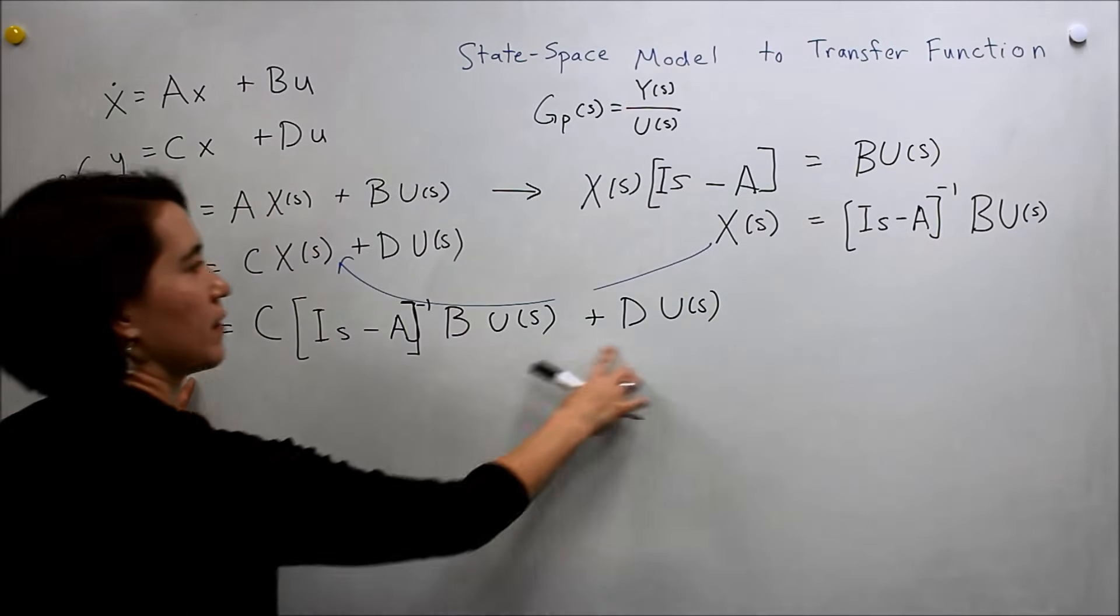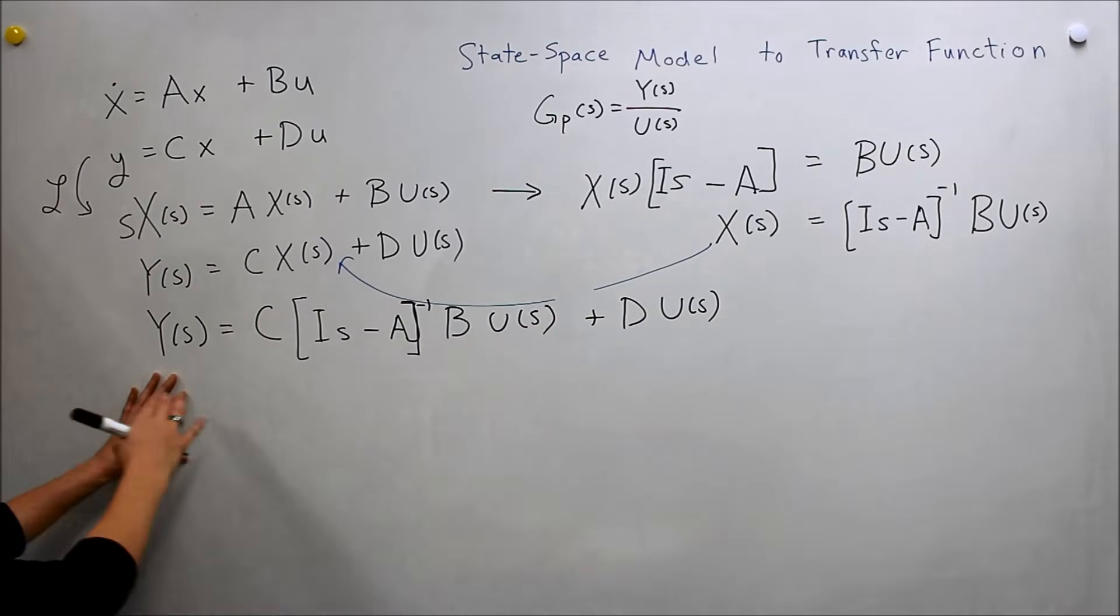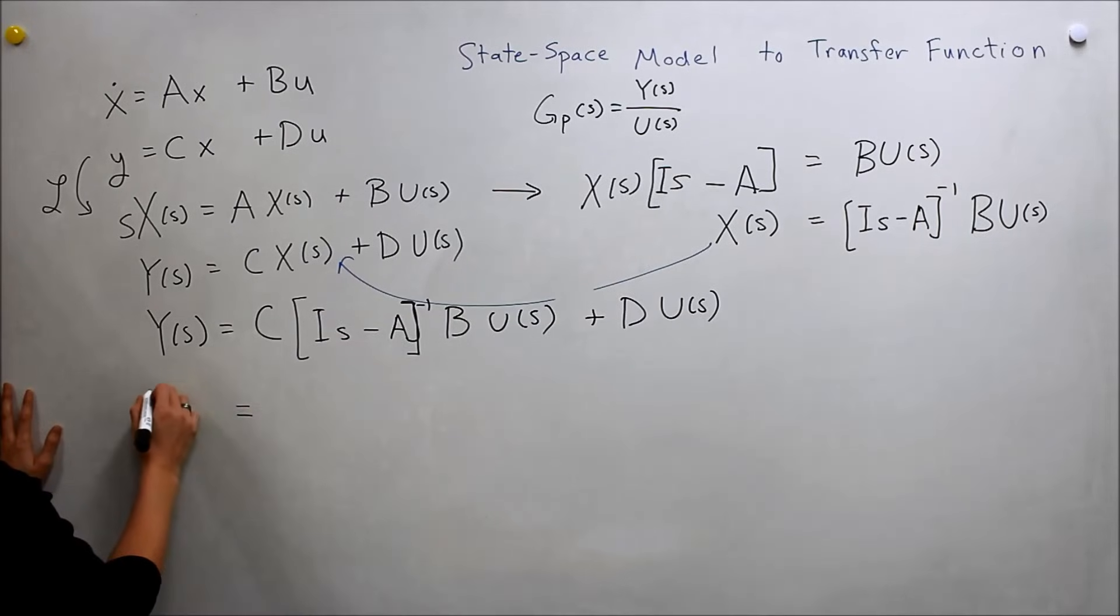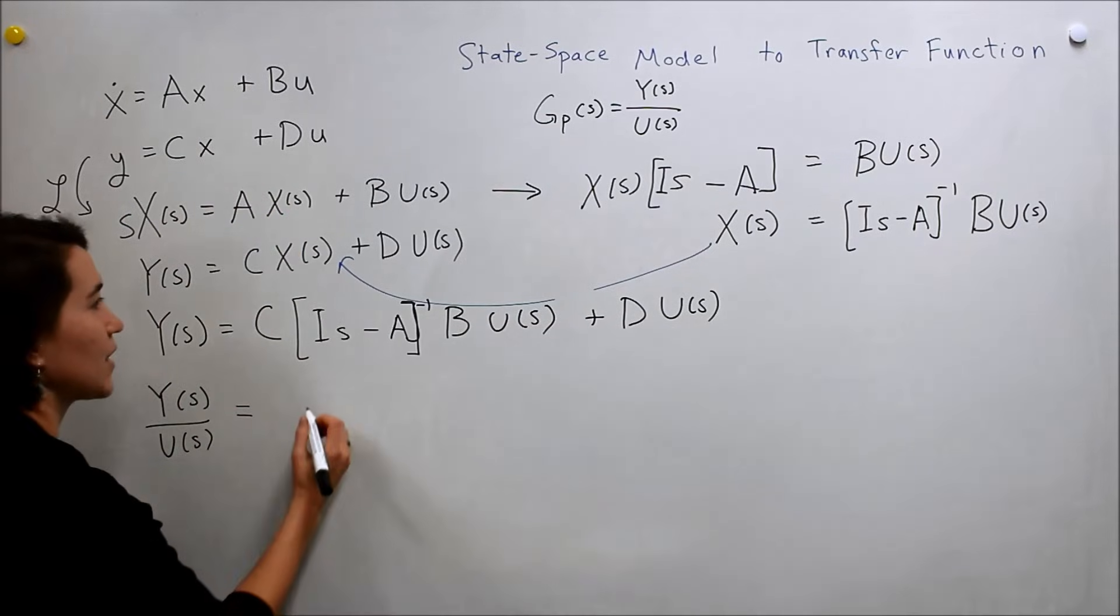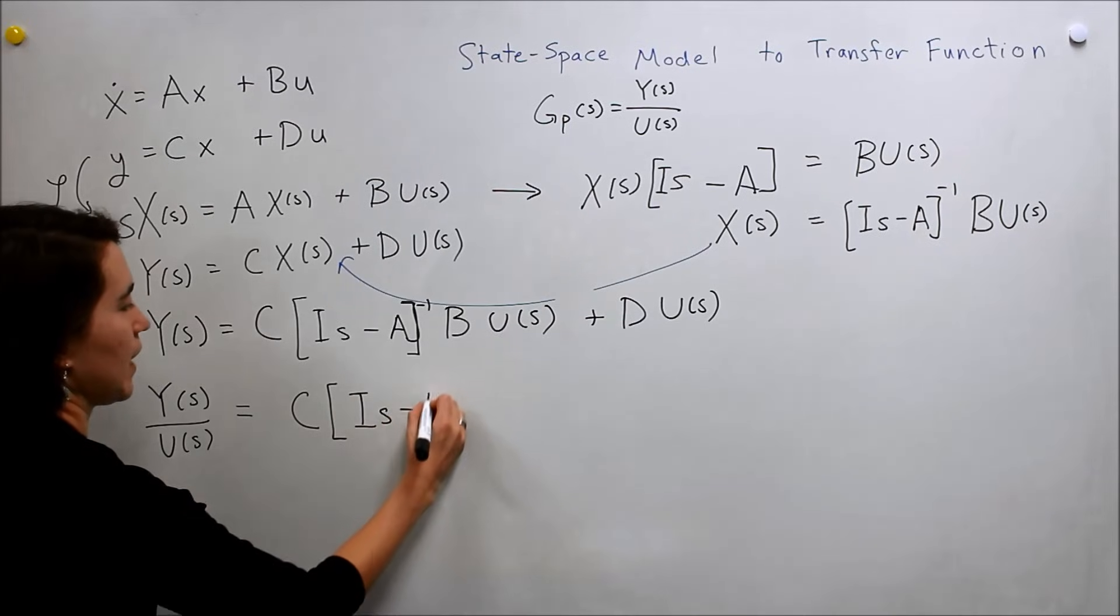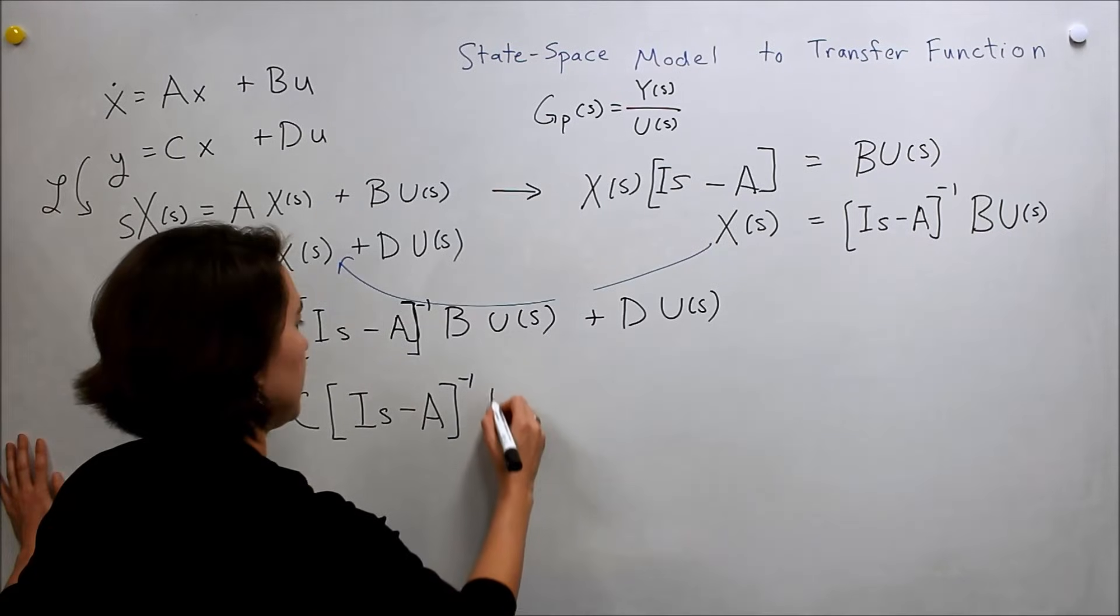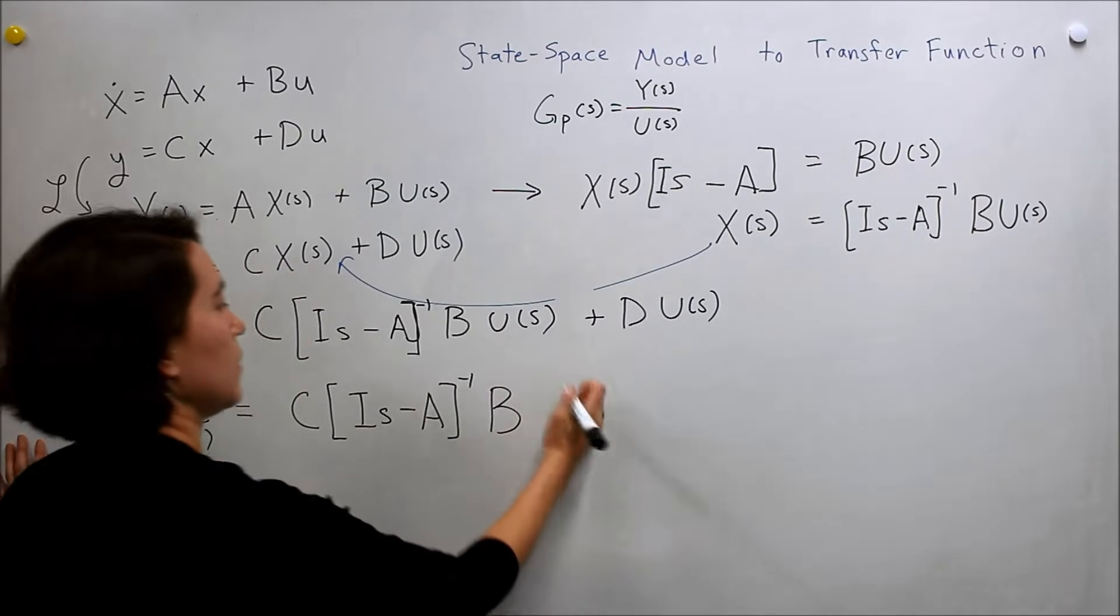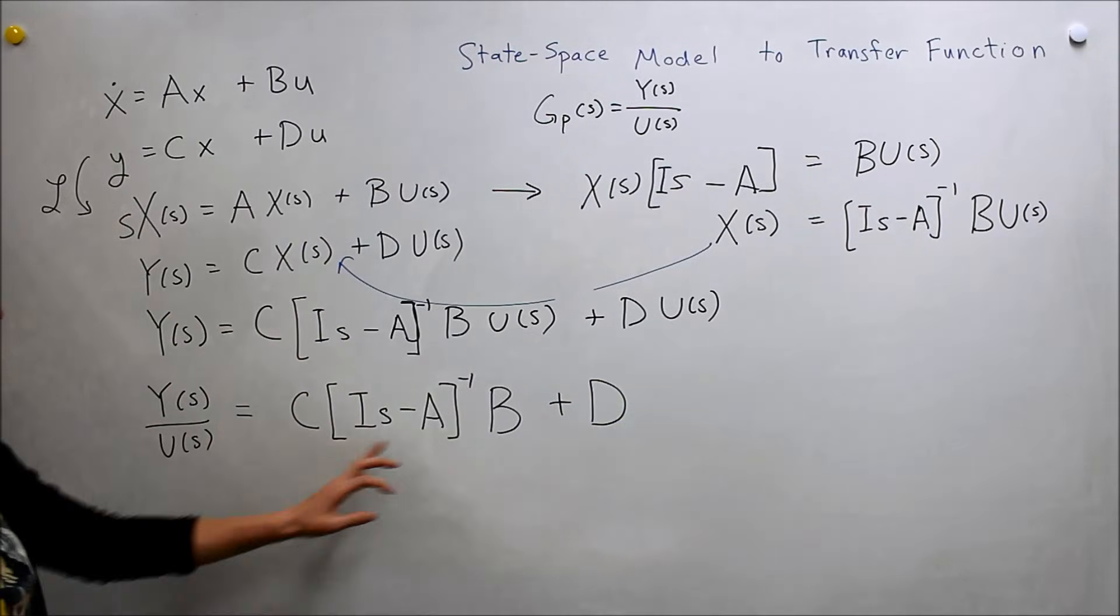Well, we have, we can separate out y, sorry, u here. And we'll actually move it straight down over here. So we'll get y of s over u of s. So we're going to take it out of both of these and then move it over. So now what's left over here is c of i s minus a inverse b, we'll check out the u, and plus d.